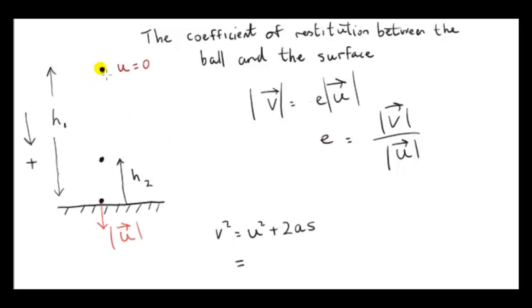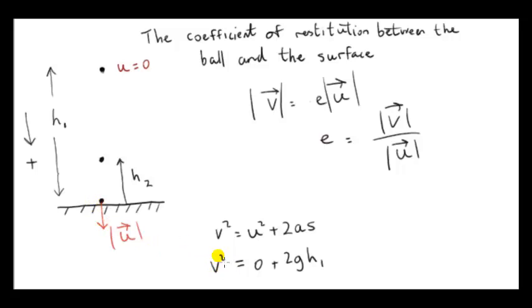The initial speed is 0. Taking the downwards direction as positive, the acceleration is g, 9.81. S is the distance, and that's h1. So the speed squared just before impact is 2gh1, meaning the speed just before impact is root 2gh1.